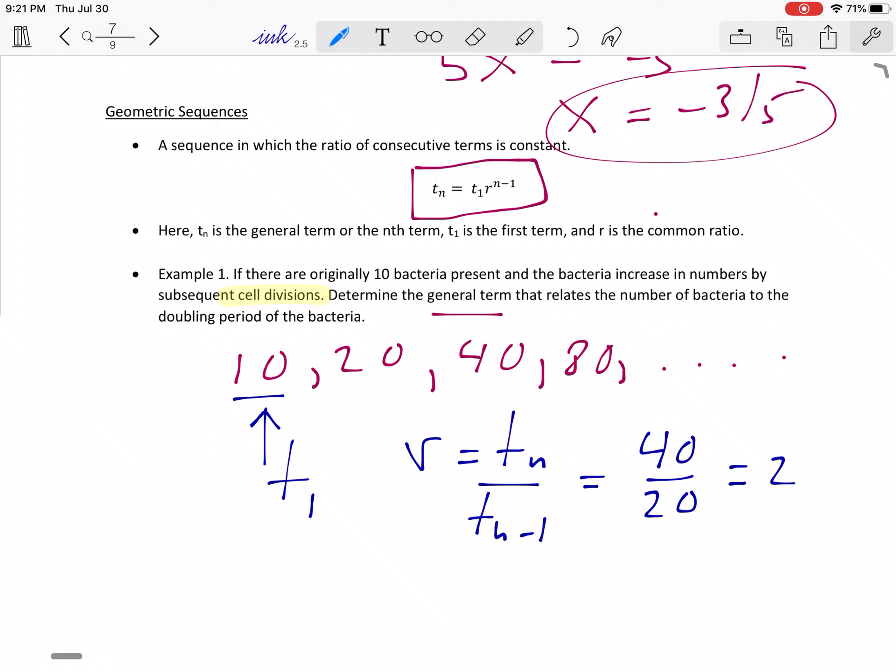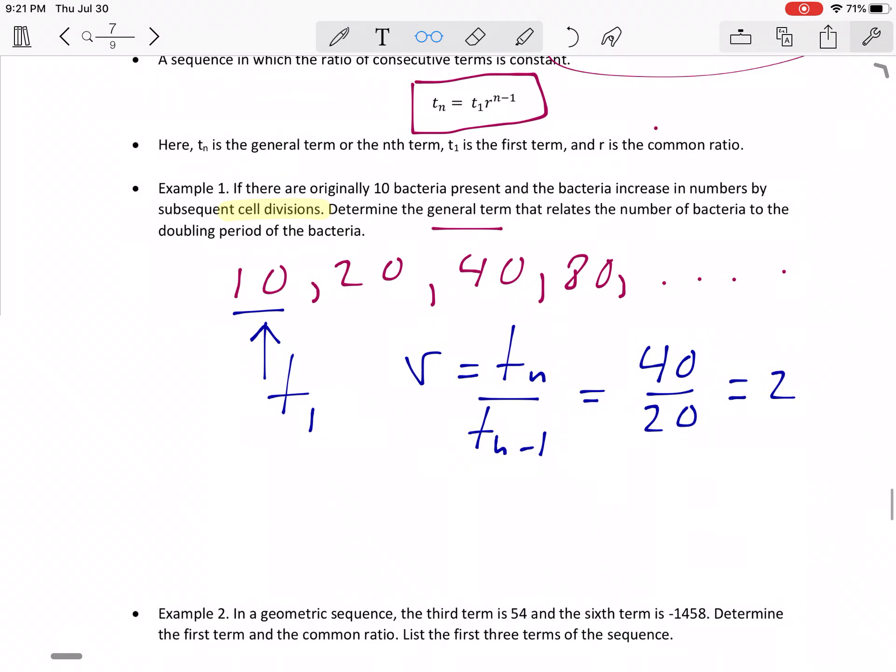So R is 2, T1 is 10. And now you can write out the general expression here, which is going to be TN equals 10, so that's T1. And then R is going to be 2 to the power of N minus 1. So this is where it ties into what we've been looking at with exponential functions, right? Because there's your exponent.